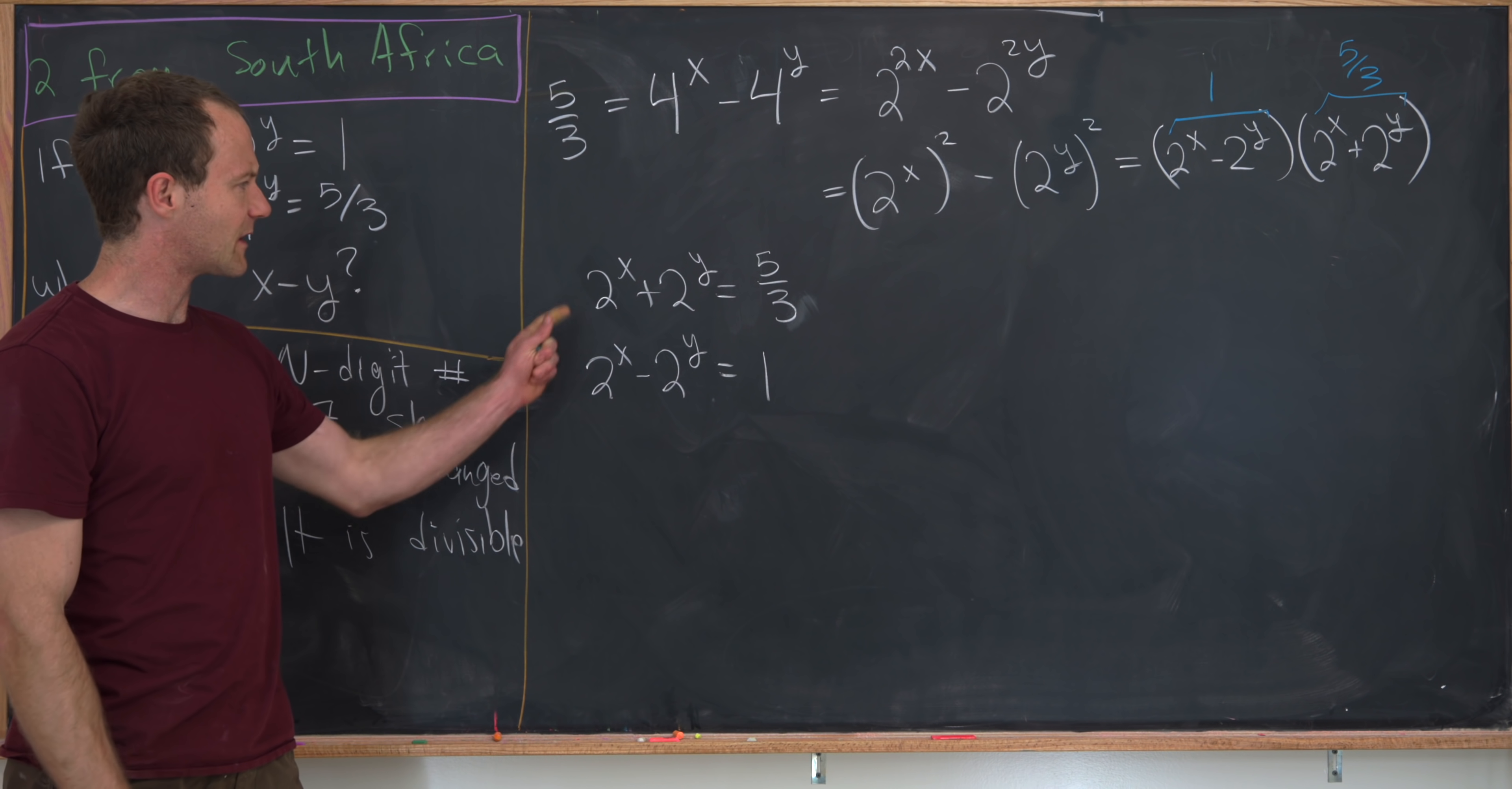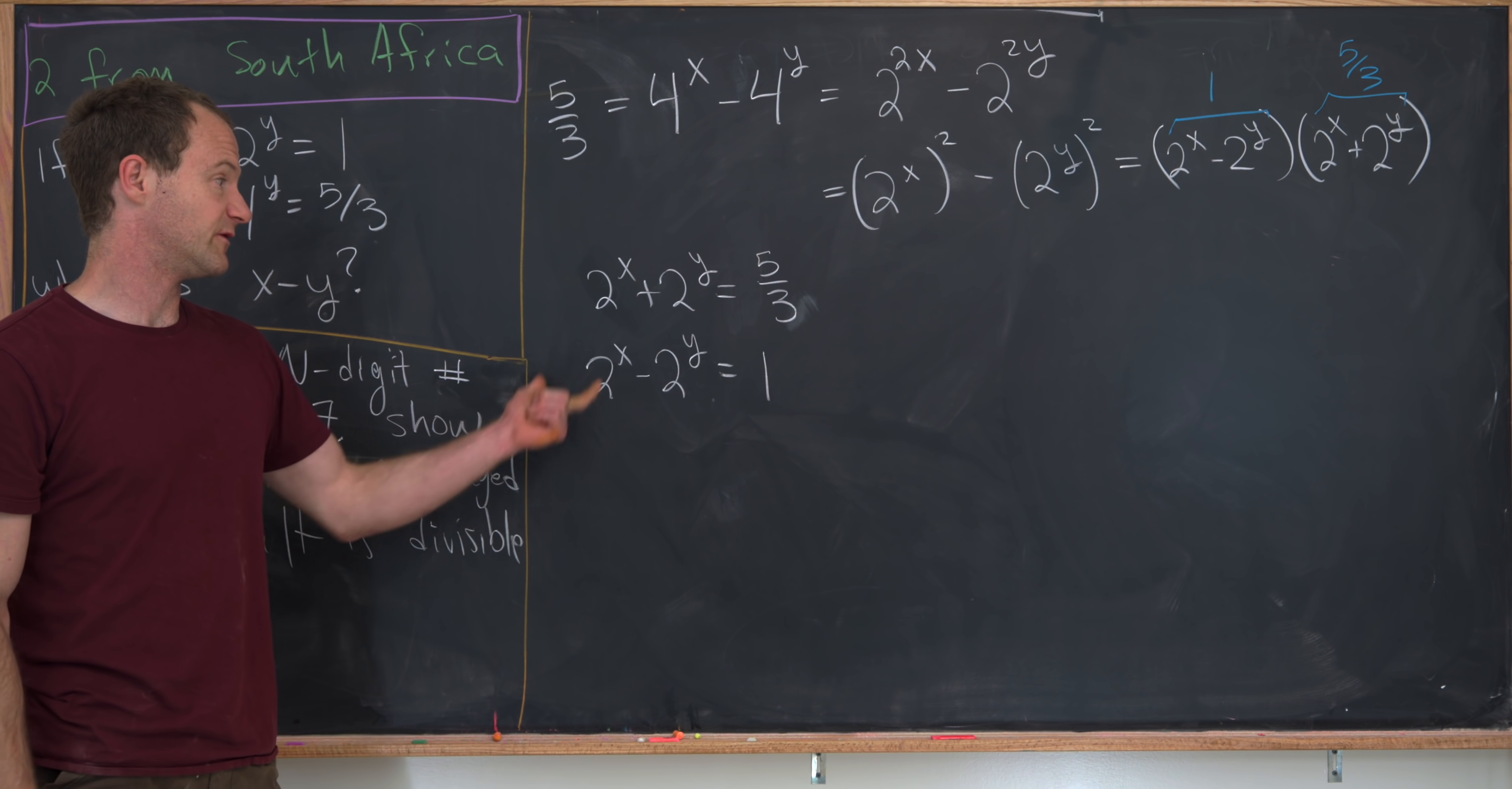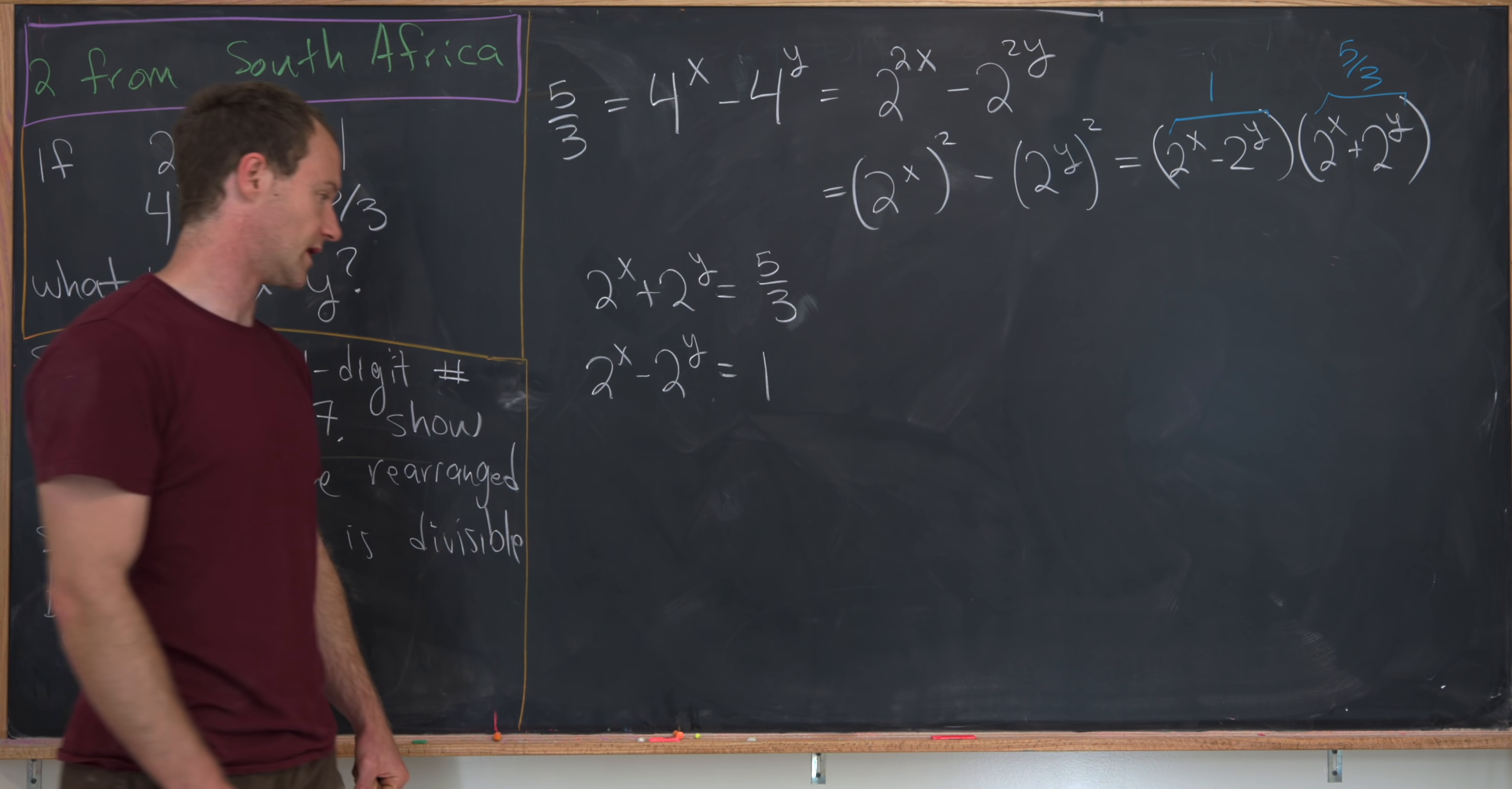Now, maybe we can think about this 2 to the x and this 2 to the y as being its own variable. And then we've got a system of 2 linear equations and 2 unknowns, where those unknowns are 2 to the x and 2 to the y.